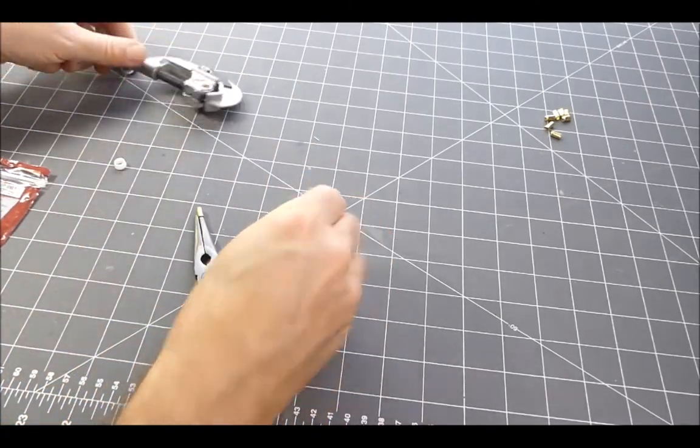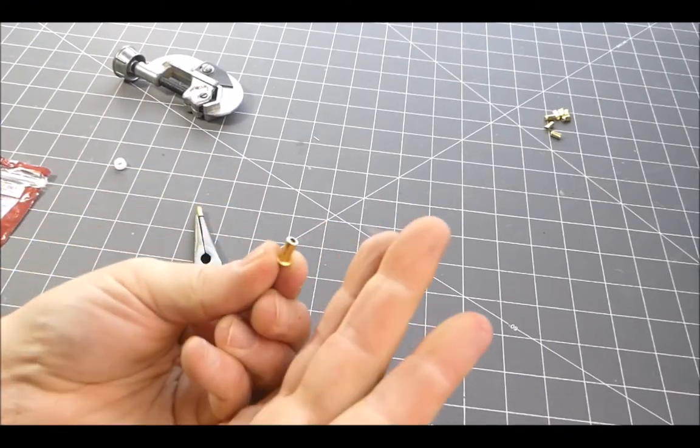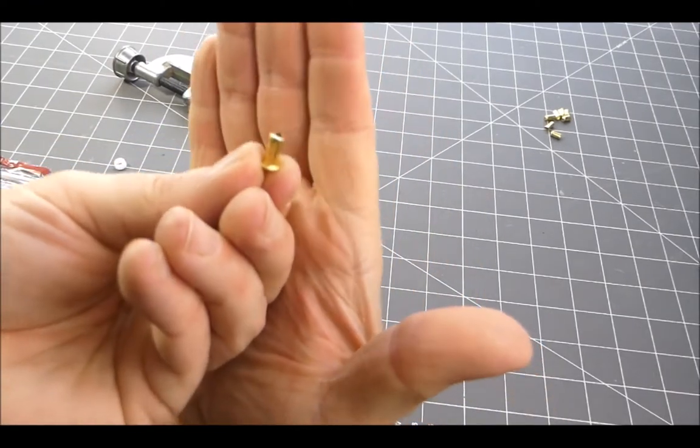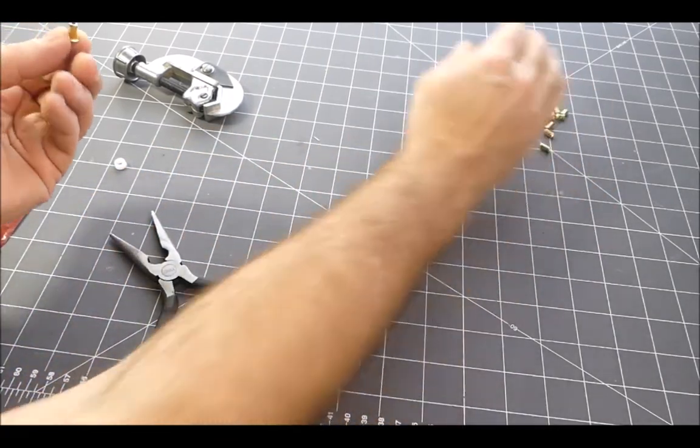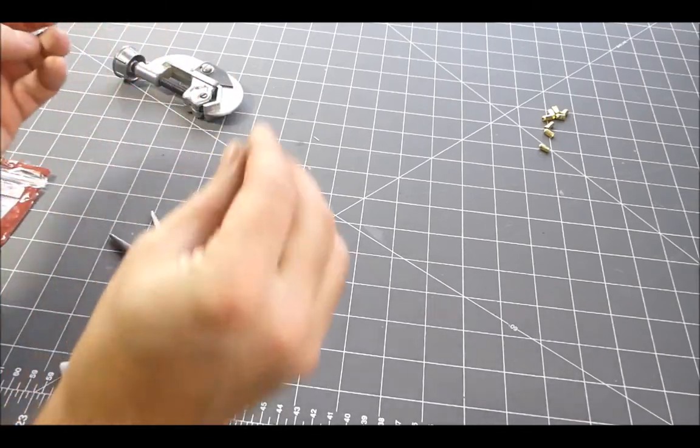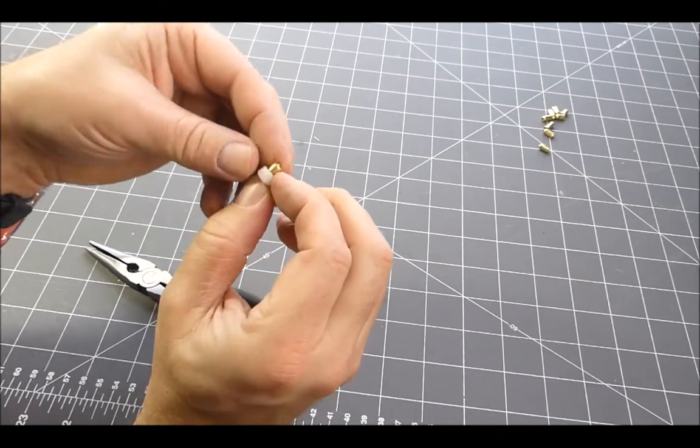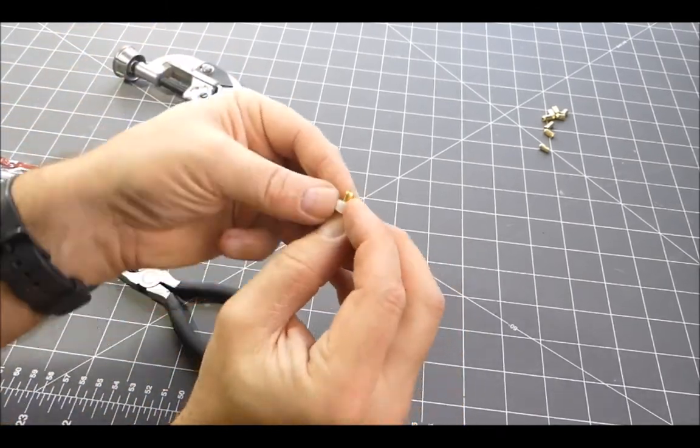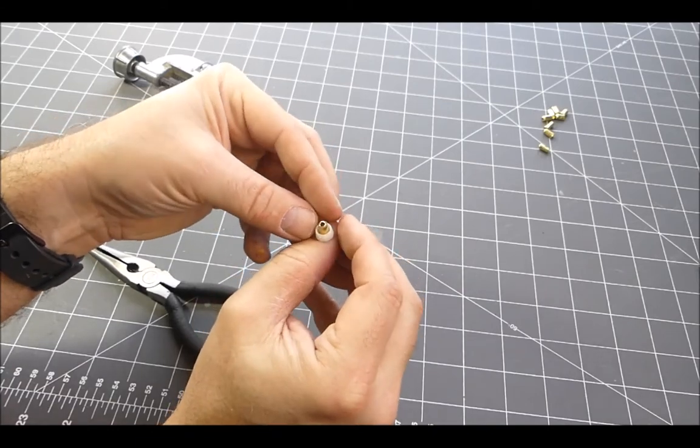There we go, you got a nice smooth cut there. Discard this piece. We've got this, and then we've got this guy going together. It's going to go like that, and that'll be the main start of the warp fire projector.